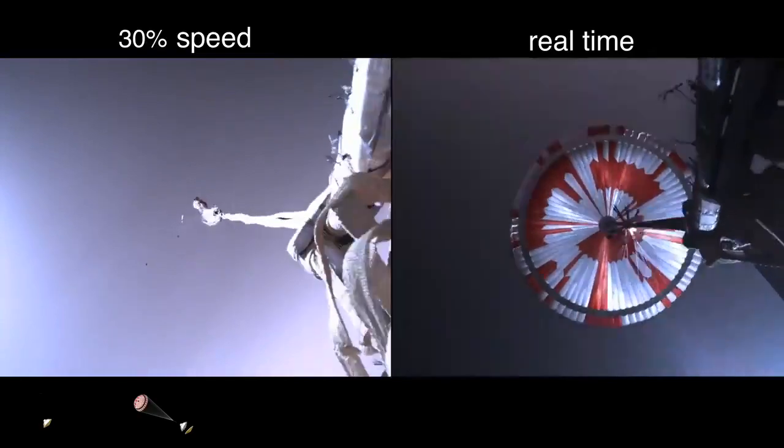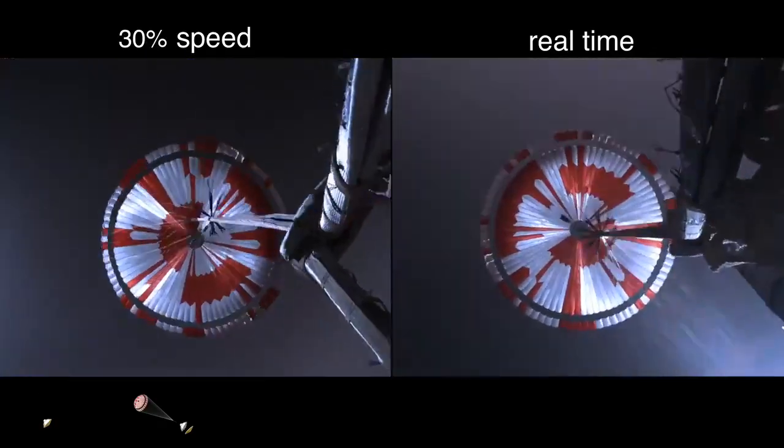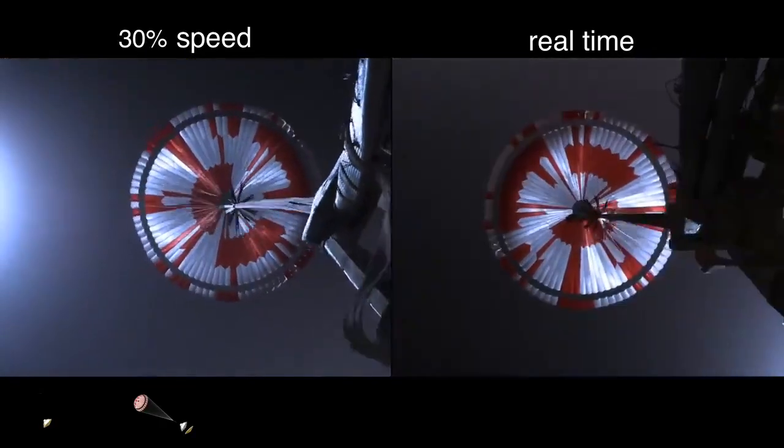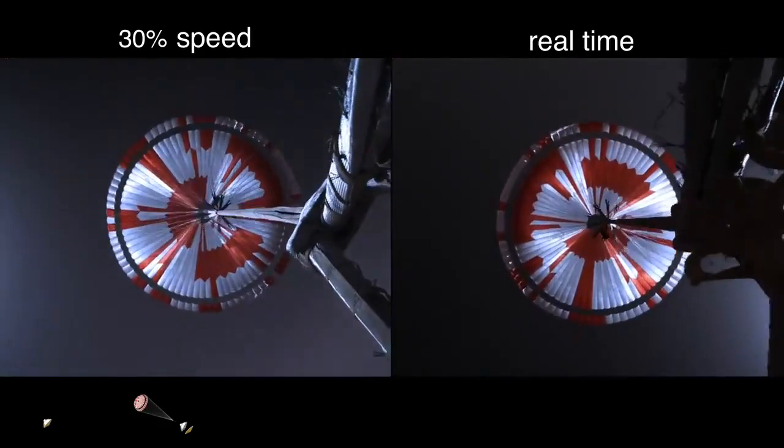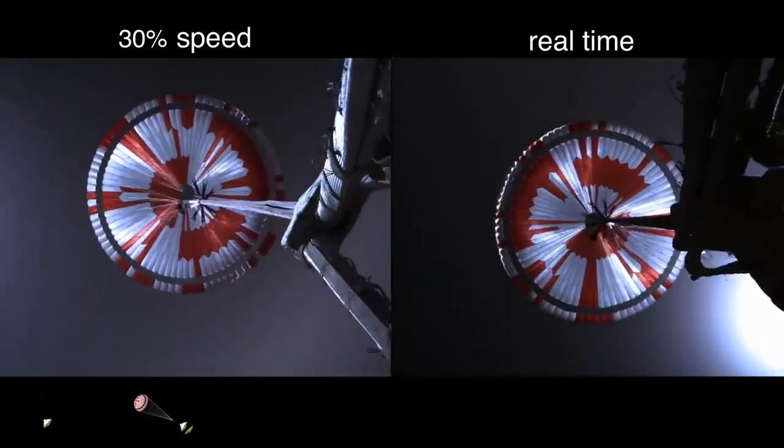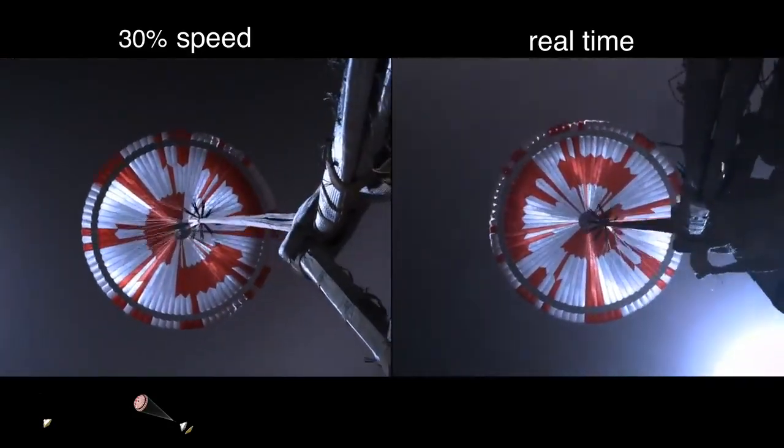Parachute deployed. The navigation has confirmed that the parachute has deployed, and we are seeing significant deceleration in the velocity. Our current velocity is 440 meters per second at an altitude of about 12 kilometers from the surface of Mars.